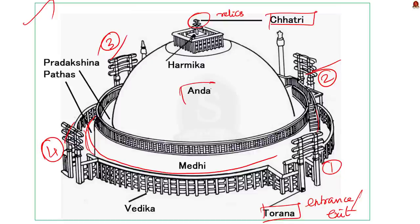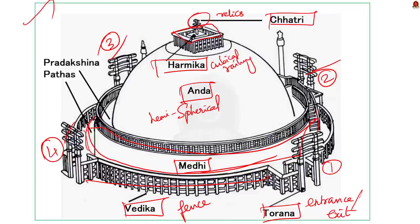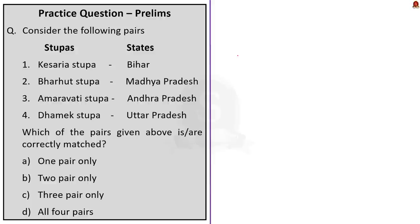Vedika are the railings present all around the Stupa — a fence-like structure around the main structure. The Medhi refers to the circular terrace at an elevation from the ground level. Finally, Hermika refers to the cubical railings present atop the Andha — it is known as a 'board of gods' in Buddhist texts. The parts of the Stupa are a potential prelims question. In this discussion, we saw that Stupas had a pre-Buddhist origin and covered the various parts of a Stupa.